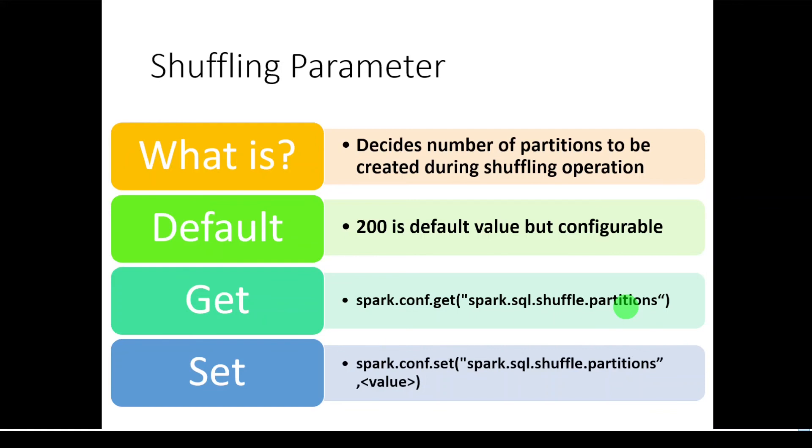And in case we have to set new value for this parameter, then we can use this command: spark configuration set, then within that we have to give the shuffle partitions parameter, then we have to pass the value. The value can be lesser than 200 or it can be more than 200. Depending on our use case, we can set any value.